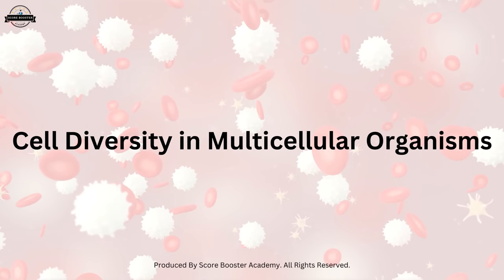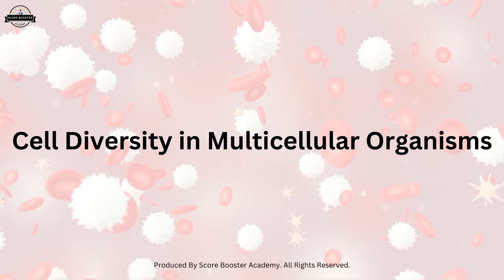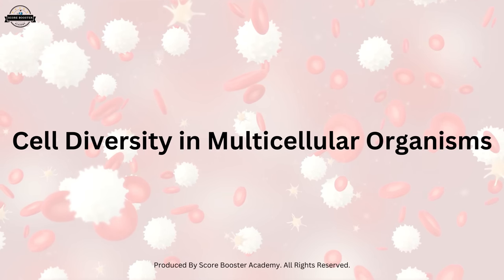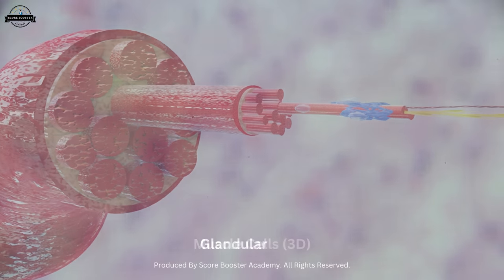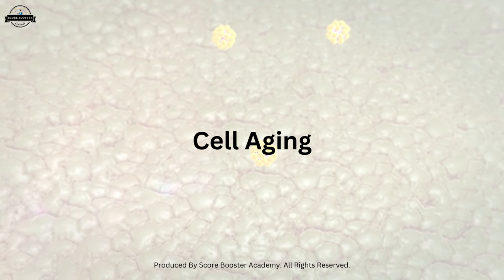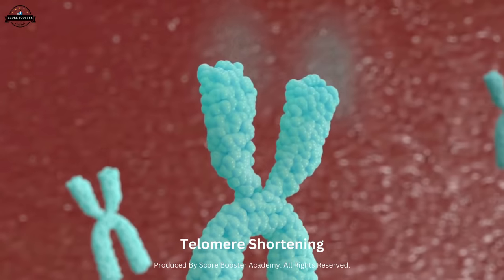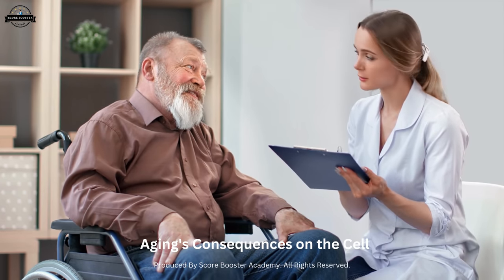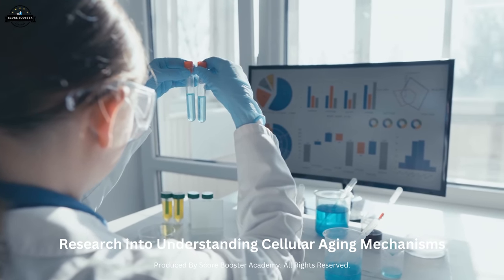In multicellular organisms, different types of cells collaborate to perform specialized functions. This division of labor allows for the efficient functioning of complex organisms. For example, muscle cells contract to generate movement, while glandular cells secrete hormones or other substances. Cells also undergo aging processes influenced by factors such as DNA damage, oxidative stress, and telomere shortening. Aging can lead to a decline in cellular function and is associated with age-related diseases. Research into cellular aging mechanisms may help develop interventions for healthy aging.